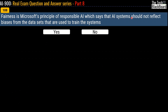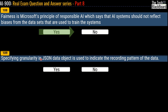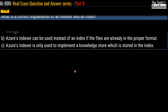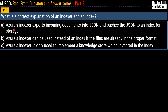Question 108: Fairness is a Microsoft principle of responsible AI which says the AI system should not reflect biases from the datasets used to train the system — the correct answer is Yes. Question 109: Specifying granularity in a JSON data object is used to indicate the recording pattern of the data — the correct answer is Yes.